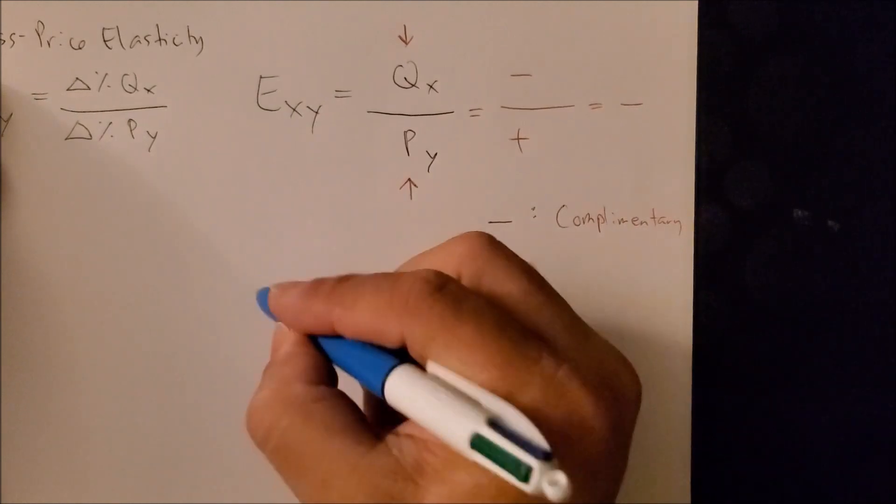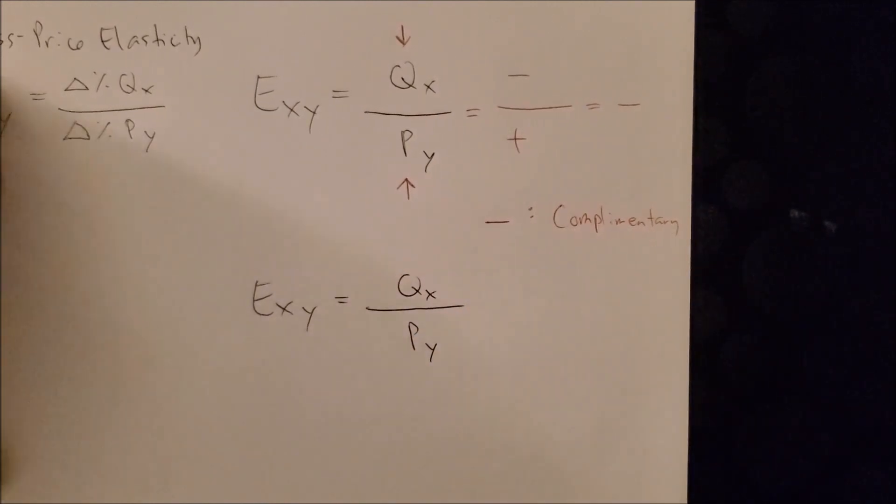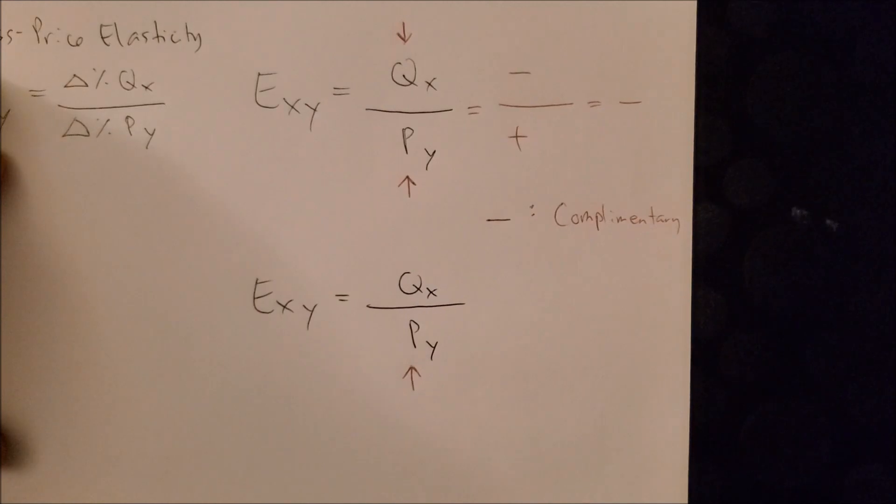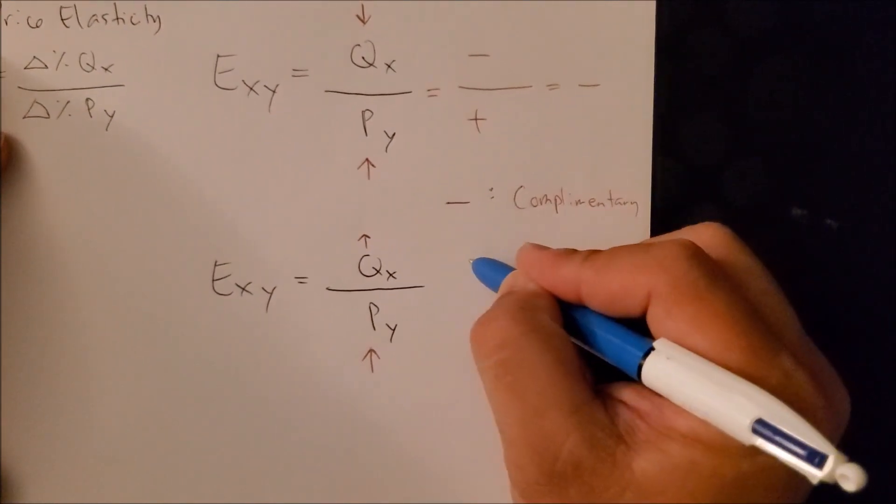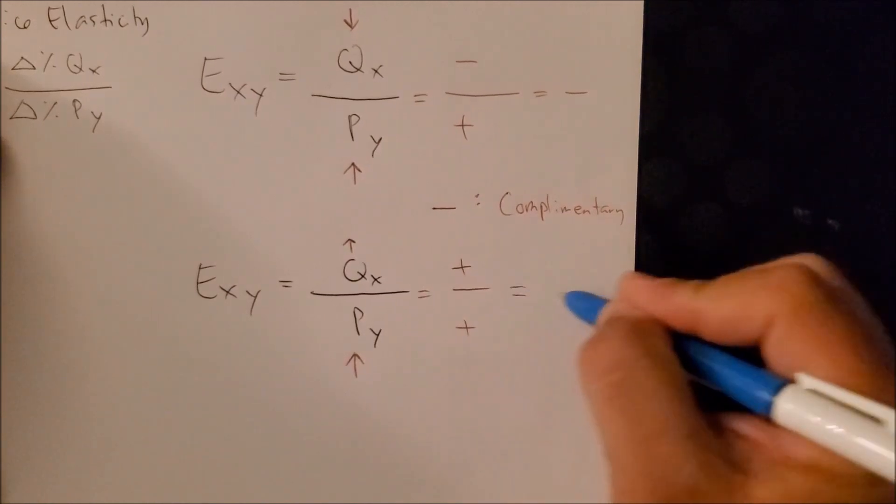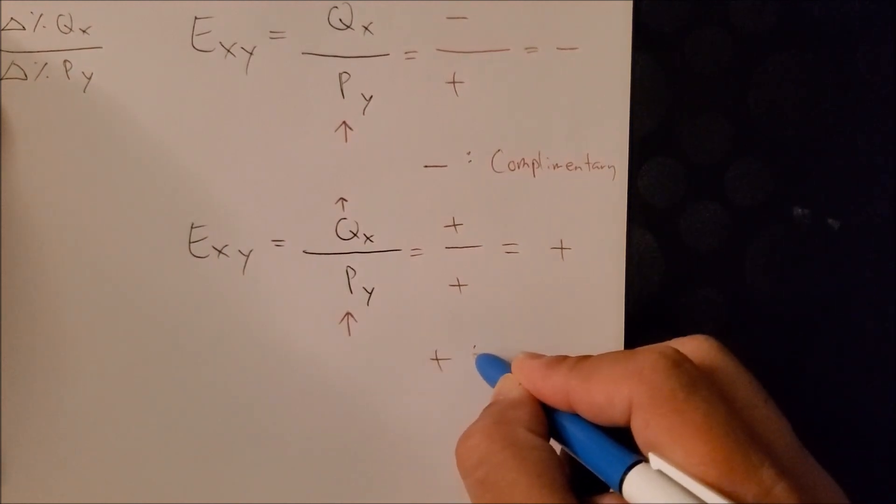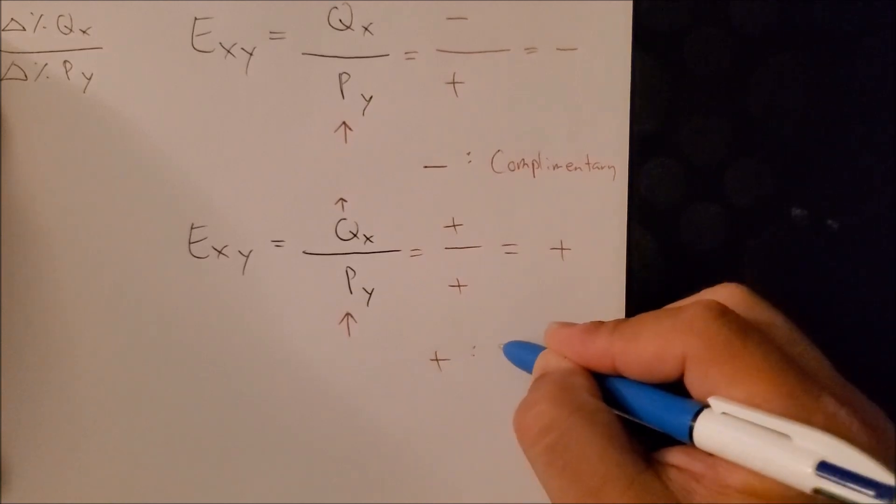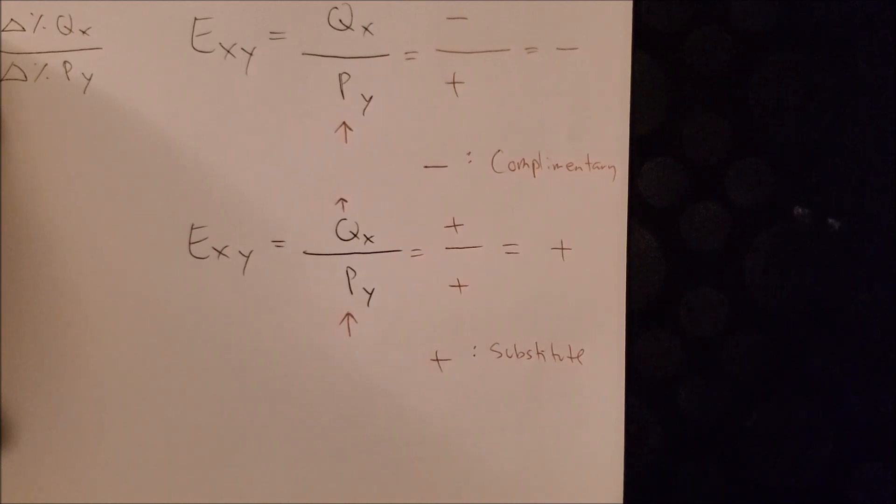Another example would be if we have the quantity of good X, price of good Y. If the price of good Y still increases in price, but now consumers are going to consume more good X, now we're going to have a positive on the numerator, a positive on the denominator, and we're bound to get a positive value. When we get a positive value, now we can say that good X and good Y have a substitute relationship.